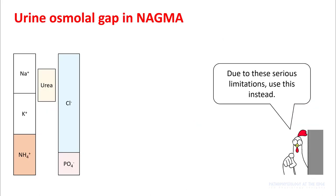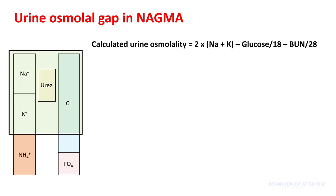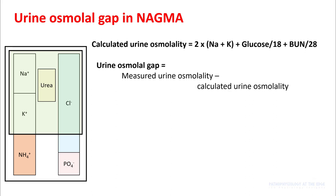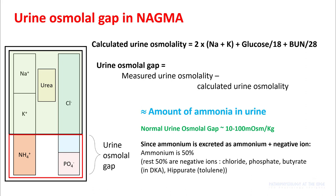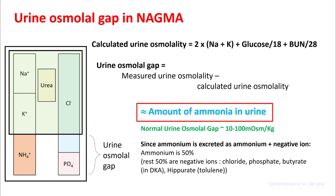There are a lot of limitations to the urine ion gap, so it's better to use another term called the urine osmolal gap. You can calculate your urine osmolality by multiplying sodium plus potassium by 2, adding glucose divided by 18 and BUN divided by 28, as we did in serum osmolality calculation. You can find the urine osmolal gap by subtracting this calculated value from the measured urine osmolality.